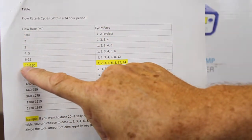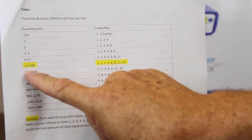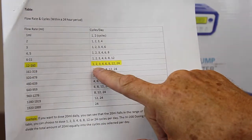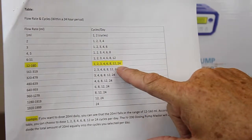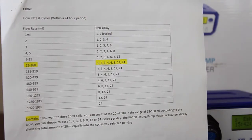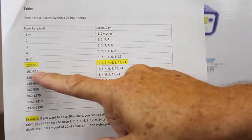It shows between 12 and 160, and 20 falls within that range. What that lets you do is dose anywhere from 1 to 24 times a day.